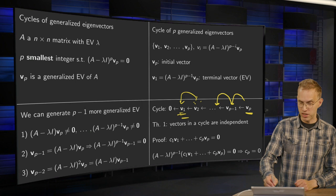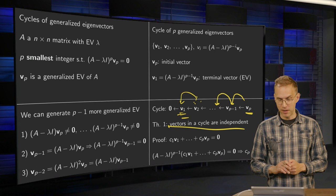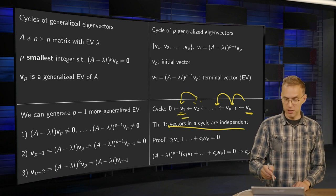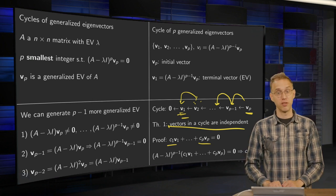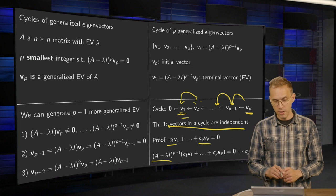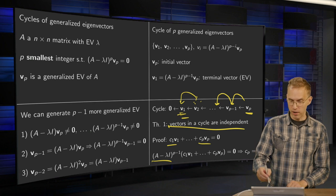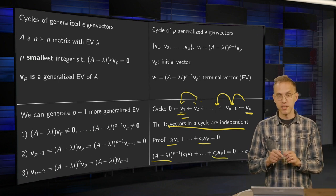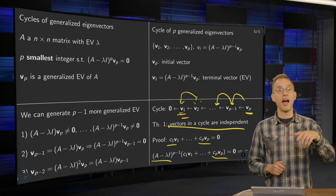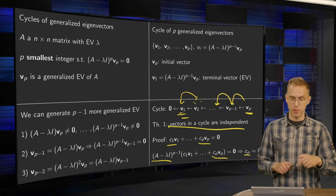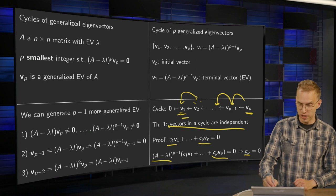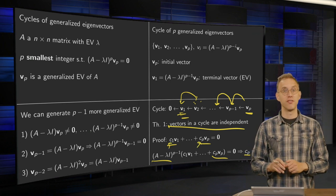The vectors in the cycle are linearly independent. Write down the definition of independence: c1·v1 + … + cp·vp = 0. Does it have a non-trivial solution? Multiply by (A − λI)^(p−1). All terms are mapped to zero except the last one, giving cp times (A − λI)^(p−1) times v1 = 0, so cp must be zero. Then multiplying by (A − λI)^(p−2) shows cp−1 = 0, and so on. In this way you can show that all coefficients are zero, meaning the generalized eigenvectors in the cycle are linearly independent.